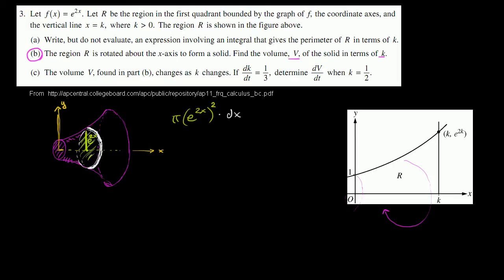What we want to do is sum all of these disks — take an infinite sum of these infinitely thin disks. We sum from x equals 0 all the way to x equals k, because x equals k is this boundary and x equals 0 is the other. Summing all the disks gives our actual volume.